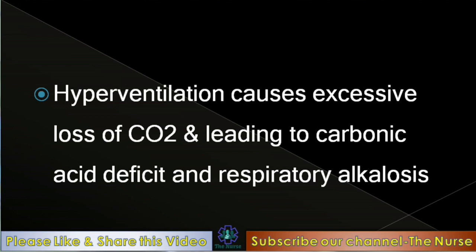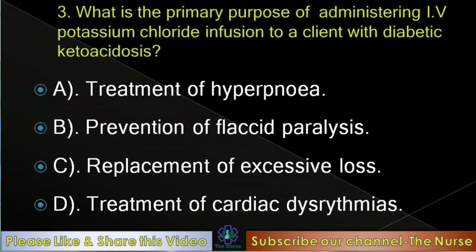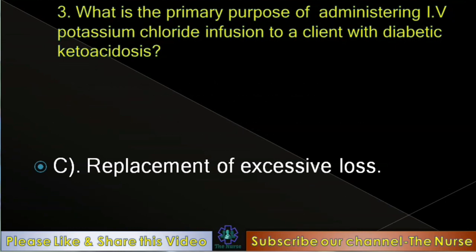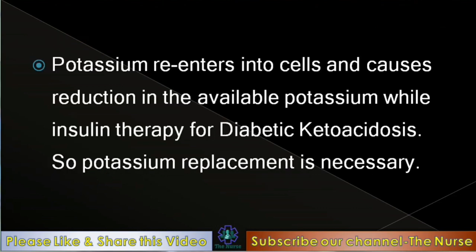Next question: What is the primary purpose of administering IV potassium chloride infusion to a client with diabetic ketoacidosis? Options: Treatment of hypokalemia, prevention of flaccid paralysis, replacement of excessive loss, treatment of cardiac dysrhythmia. Correct answer: Replacement of excessive loss. Potassium re-enters cells and causes reduction in available potassium during insulin therapy for diabetic ketoacidosis, so potassium is necessary to replace.